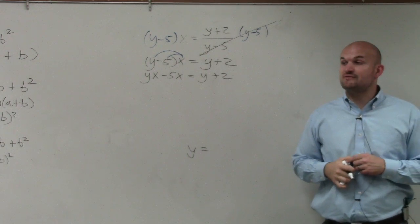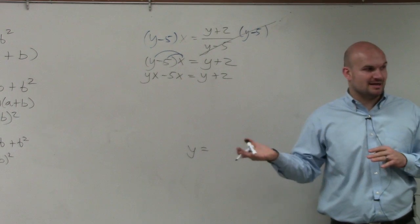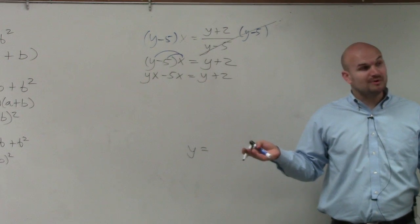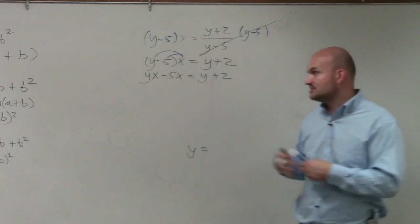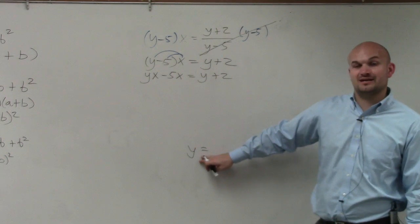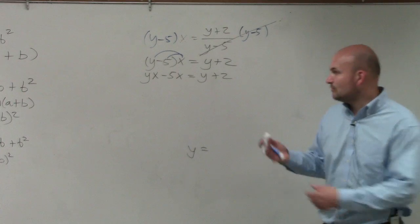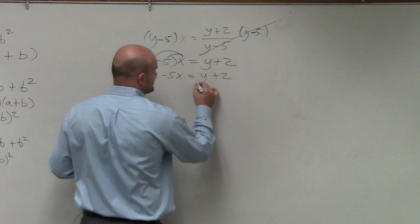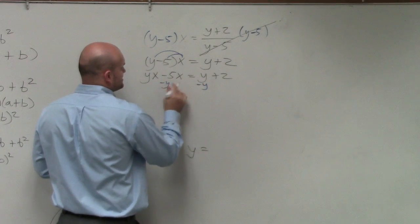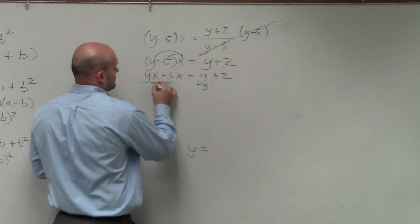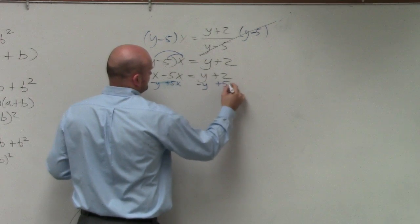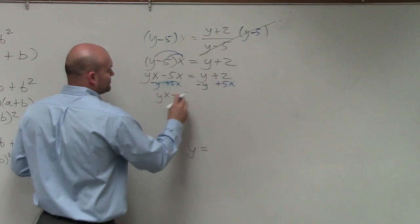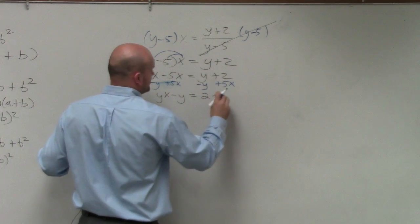So now I have yx minus 5x equals y plus 2. We have a y on the left side and a y on the right side. We can't solve for y when we have a y on both sides, so we need to get the y's to the same side. Let's put the y on the left side. Using algebra inverse operations, subtract y on both sides and add 5x on both sides.